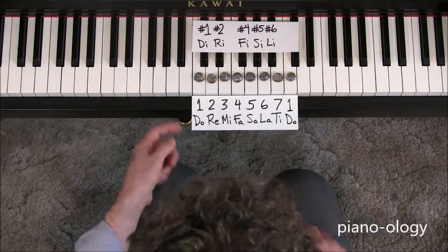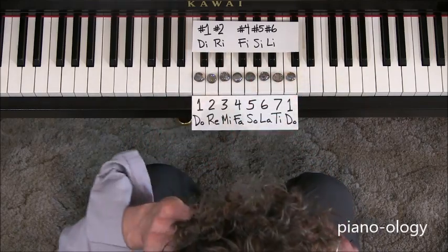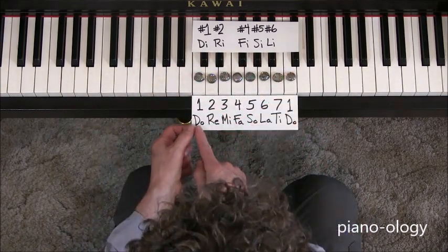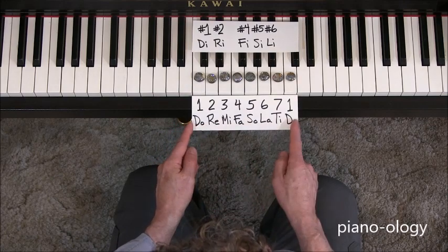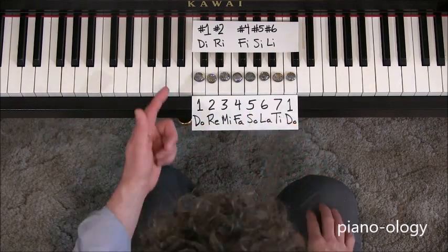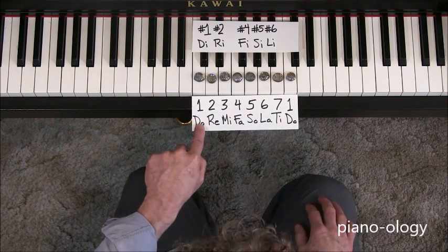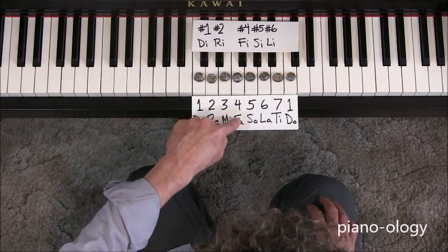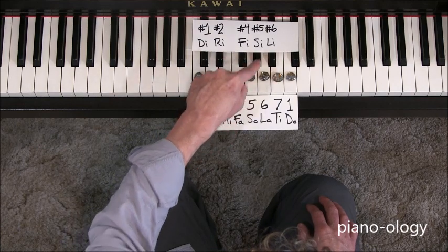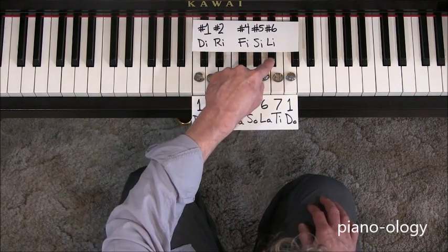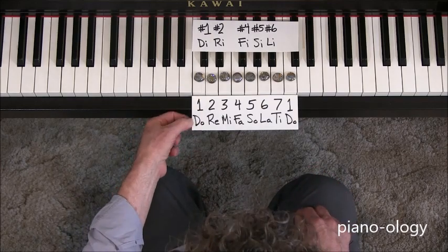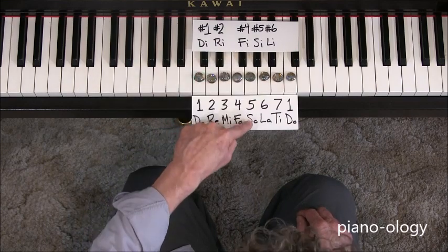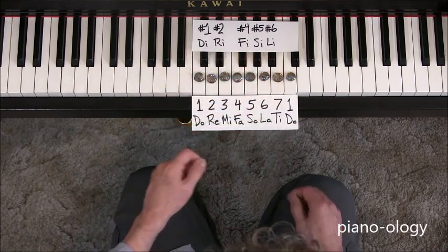And by the way, all these in-between notes also have solfege names. And guess what? Those solfege names are variations of the root solfege that the note is based on. For example, notice that DO sharp is DI. RE sharp is RI. FA sharp is FI. SO sharp is SI. LA sharp is LI. So notice: D, DI, R, RI, F, FI, S, SI, LA, LI.